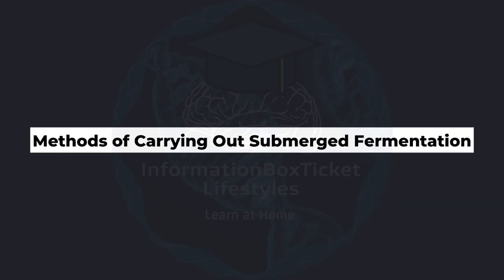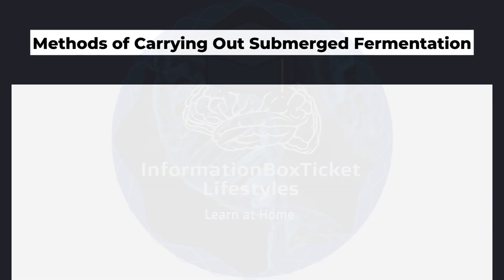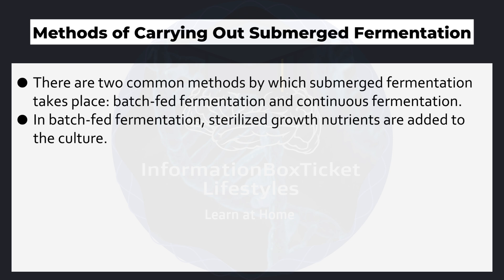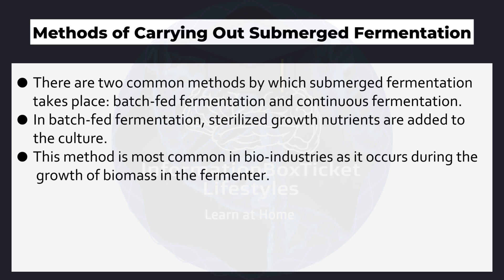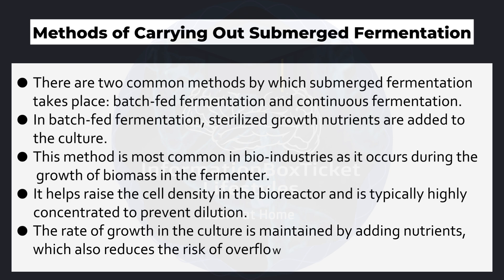Methods of Carrying Out Submerged Fermentation. There are two common methods: batch-fed fermentation and continuous fermentation. In batch-fed fermentation, sterilized growth nutrients are added to the culture. This method is most common in bio-industries, as it occurs during the growth of biomass in the fermenter. It helps raise the cell density in the bioreactor and is typically highly concentrated to prevent dilution. The rate of growth in the culture is maintained by adding nutrients, which also reduces the risk of overflow metabolism.